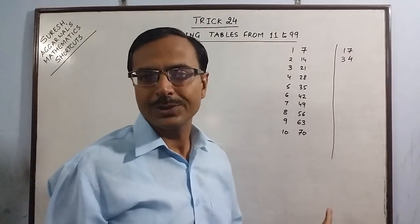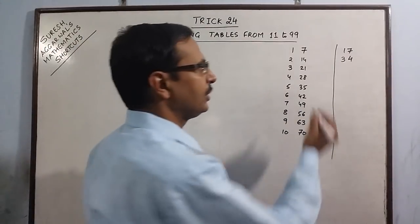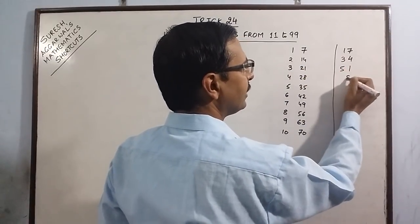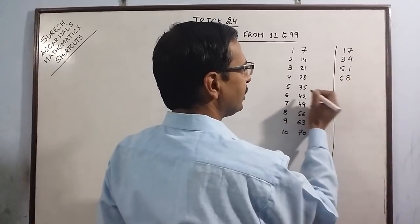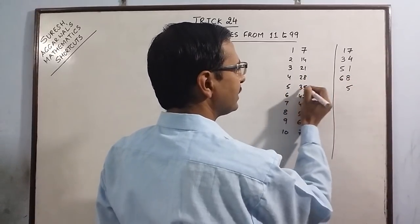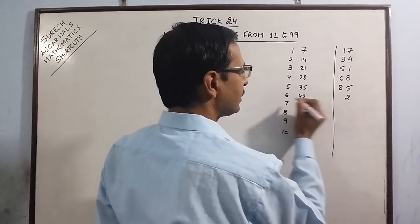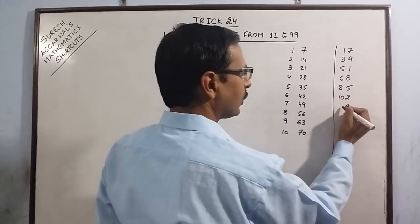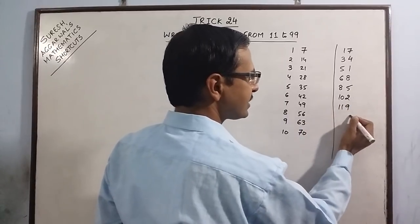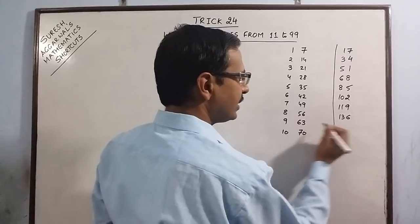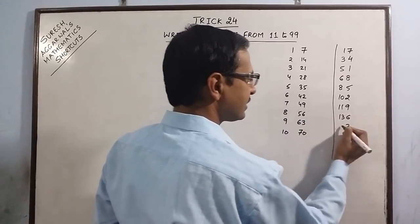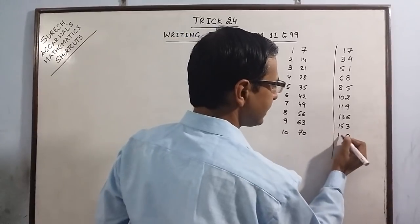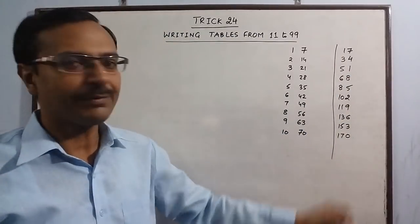This method continues and you can write the full table of 17: unit digit 1, 3 plus 2 is 5; unit digit 8, 4 plus 2 is 6; unit digit 5, 5 plus 3 is 8; unit digit 2, 6 plus 4 is 10; unit digit 9, 7 plus 4 is 11; unit digit 6, 8 plus 5 is 13; unit digit 3, 9 plus 6 is 15; unit digit 0, 10 plus 7 is 17. Now this is the table of 17.